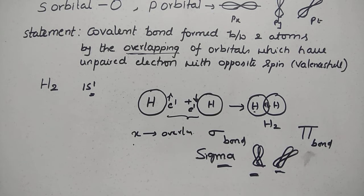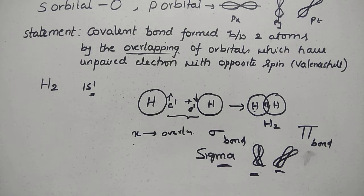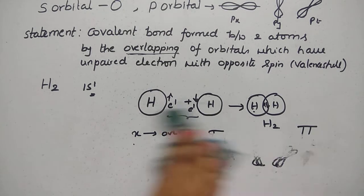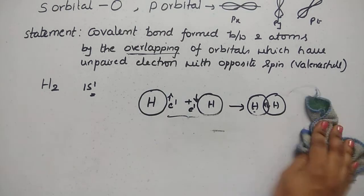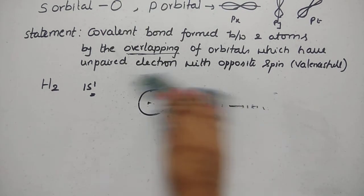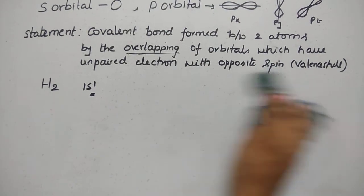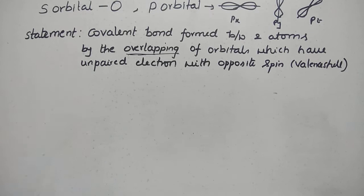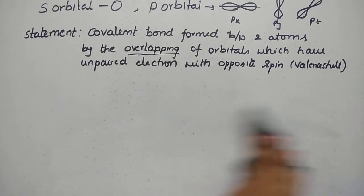So the statement is: a chemical bond is formed between two atoms by the overlapping of orbitals which have unpaired electrons with opposite spin.